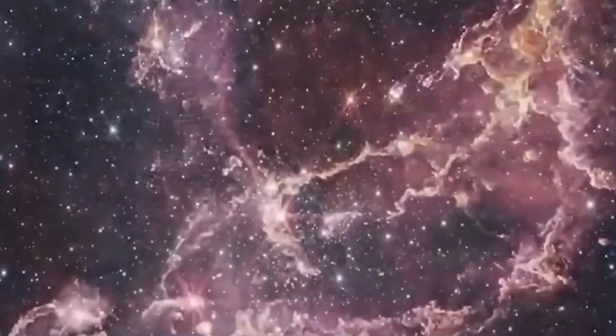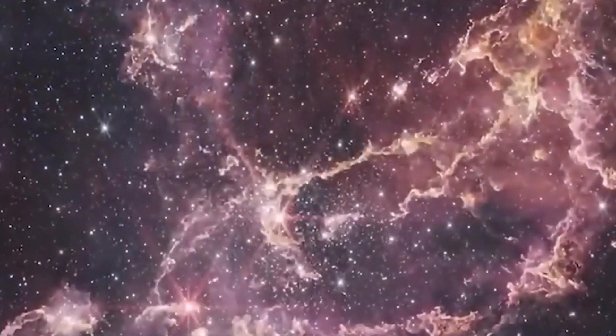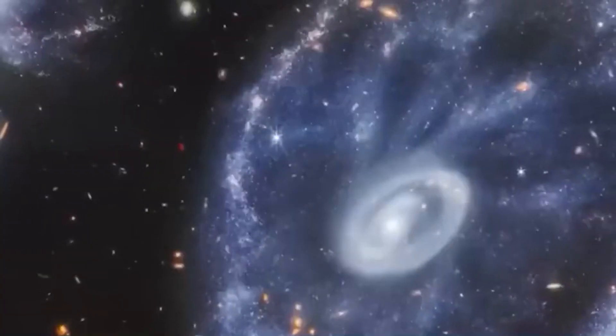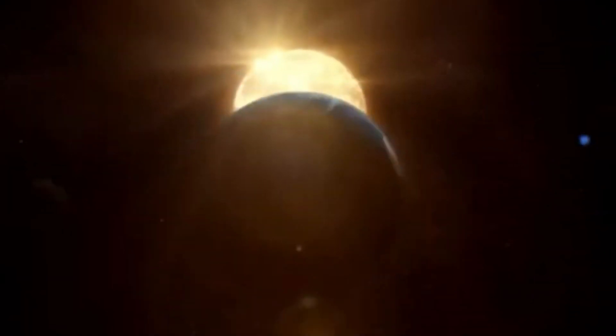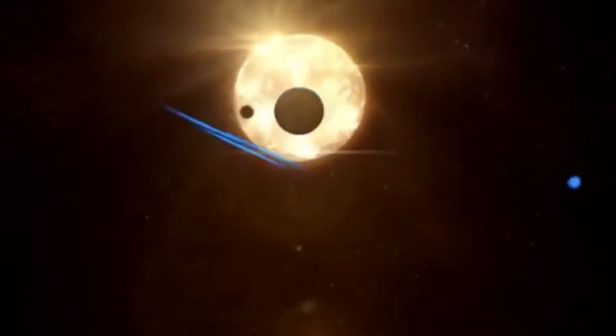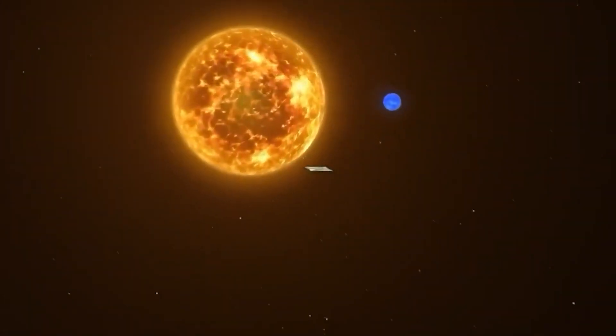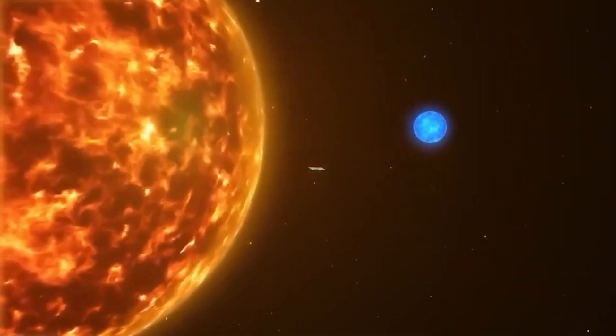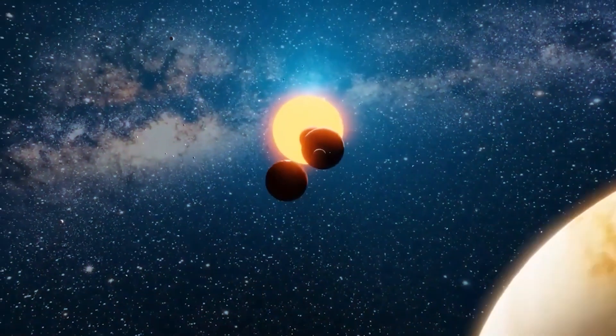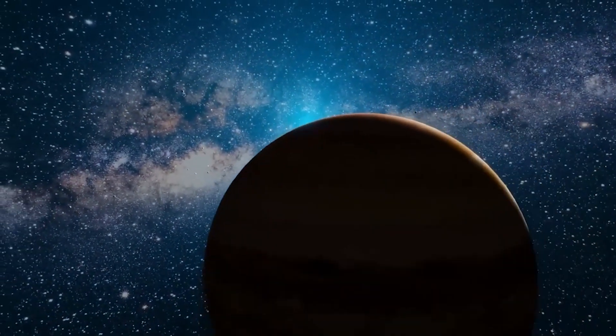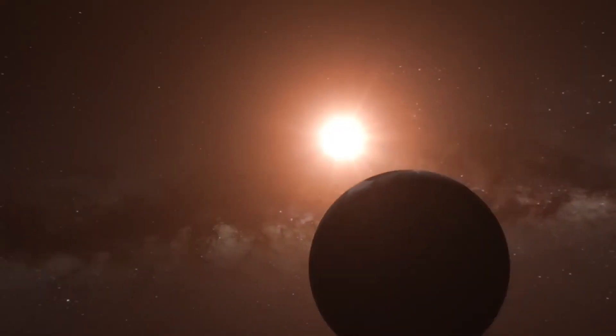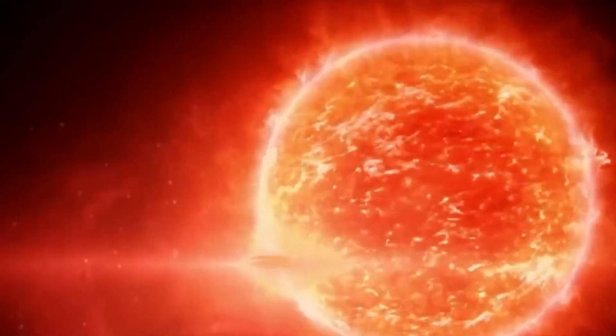And then, there's the convection. If you're imagining soup bubbling on the stove, you're not too far off. In stars like Betelgeuse, convection is the main way energy moves around. Hot stuff rises. Cooler stuff sinks. But instead of little bubbles, Betelgeuse might be pushing out massive plumes of material the size of planets. If one of these giant convective plumes made it to the surface and caused an ejection, that could explain the sudden surge in brightness.